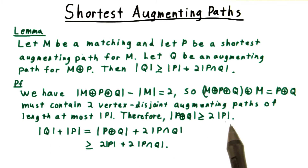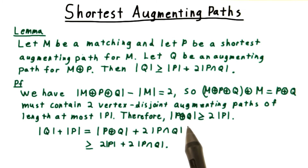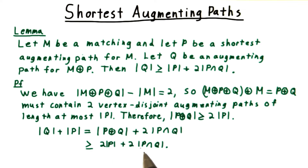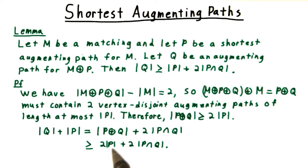Applying our bound on the size of the symmetric difference between p and q, we then have that this is at most twice the size of p plus two times the overlap of p and q, and subtracting off the size of p from both sides gives us the theorem.